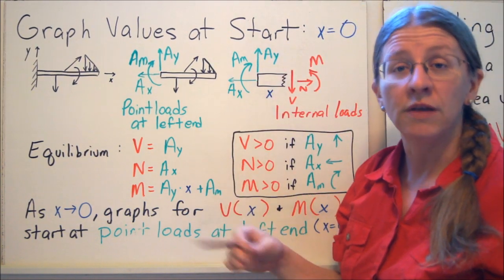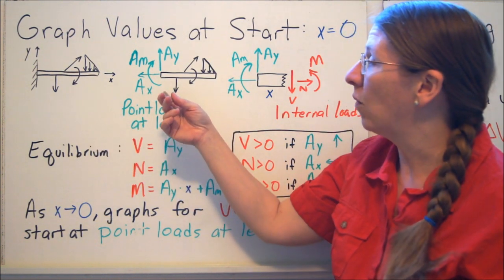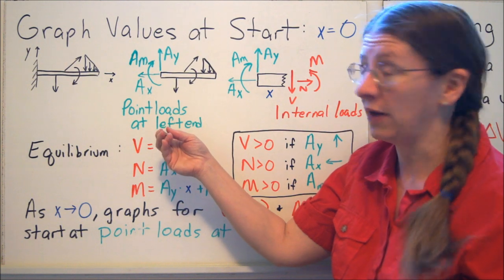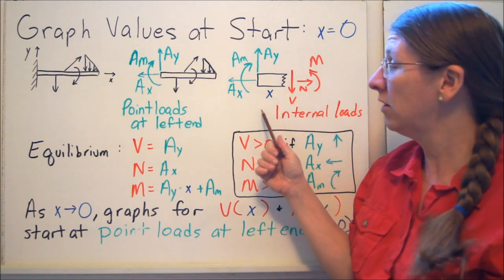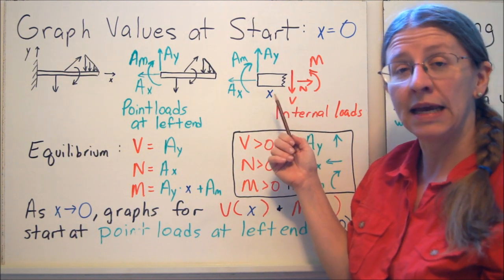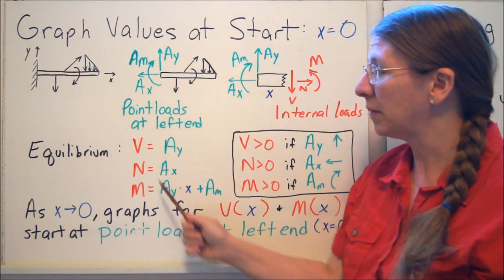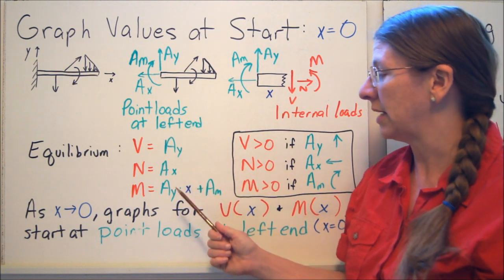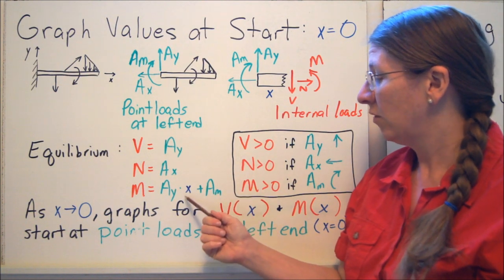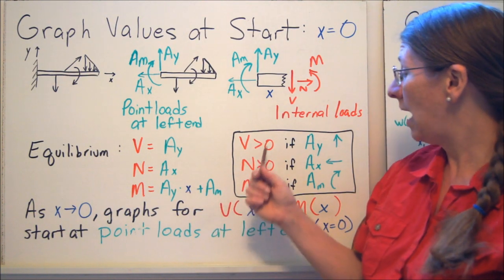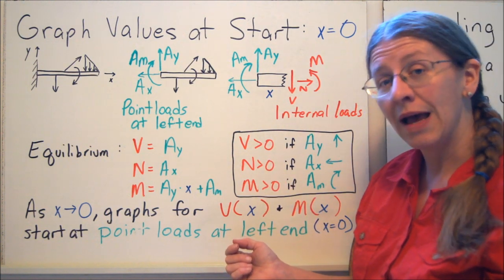So where do these graphs start? If I know how they start at the left hand end, I know what to do with them. If we take a generic beam and look at what our point loads are at the left hand end, here's just a little slice of the beam, a very small X, very close to the end. And then as I take X equals zero, I'll know where my graphs start. So here are my internal loads put on here. If I do the equilibrium of this, what I get is V equals AY, N equals AX, and M is AY times X, this little distance, plus MA. Of course, as X goes to zero, this goes away. So all I have is these graphs start at the point loads at the left hand end.